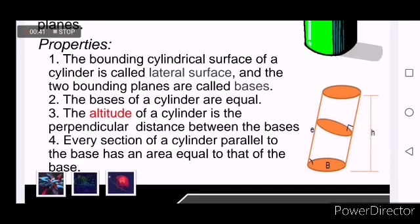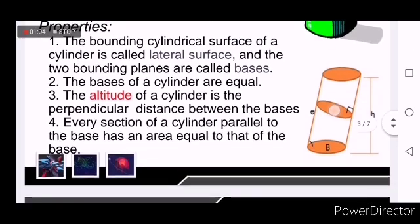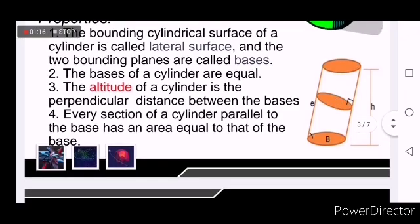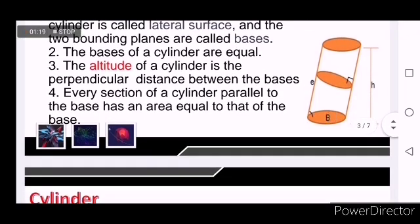The bases of a cylinder are always equal. So you need to remember that so it will be easier for us to recall the formulas. The altitude of a cylinder is the perpendicular distance between the bases, and every section of a cylinder parallel to the base has an area equal to that of the base. The circular section here in the middle is called a section. If this middle section is parallel to the base, then they are equal.